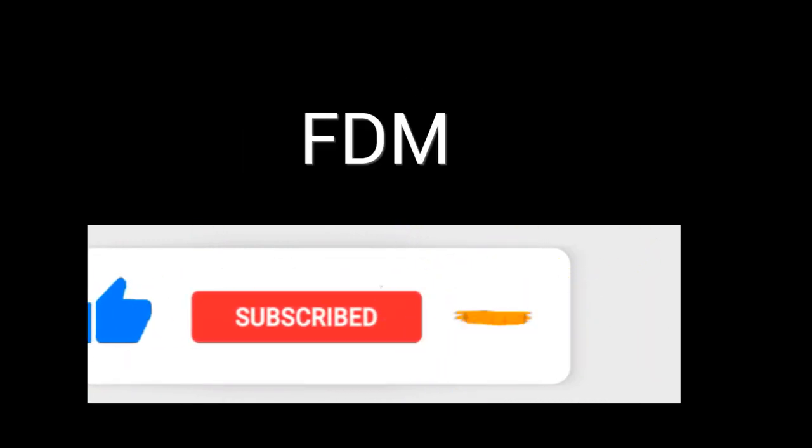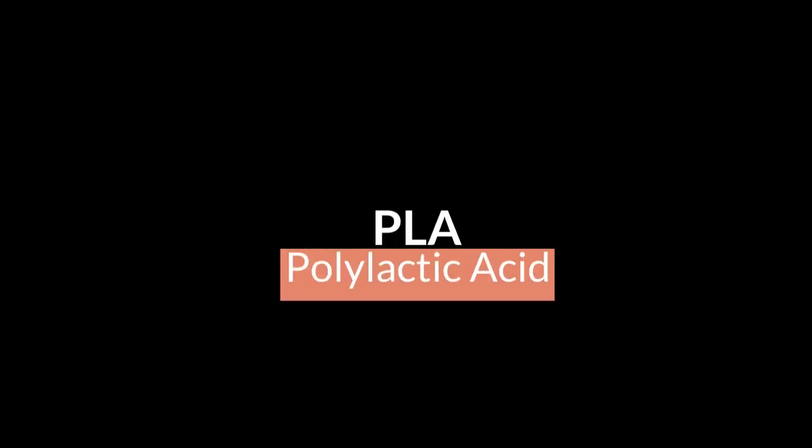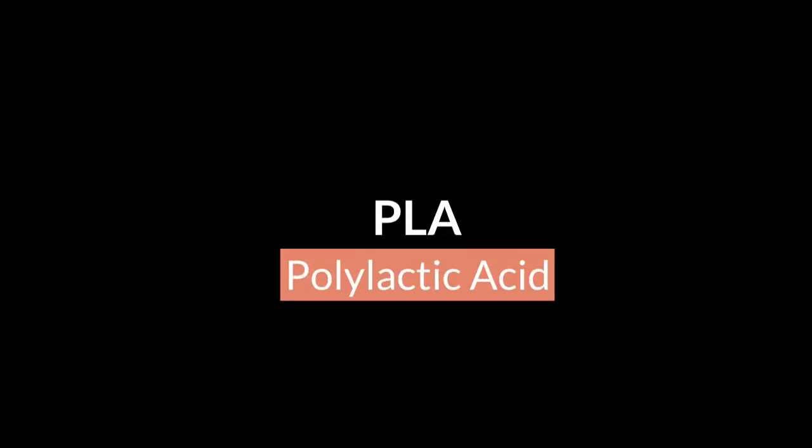FDM stands for Fused Deposition Modeling. FDM printing, sometimes known as filament printing, uses plastic that comes in rolls. The main type of plastic used in this is called PLA. The average price of PLA is around 20 US dollars.